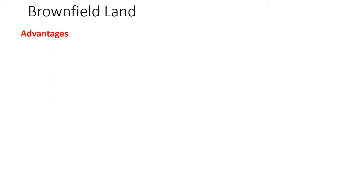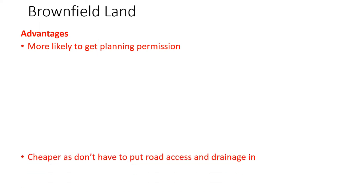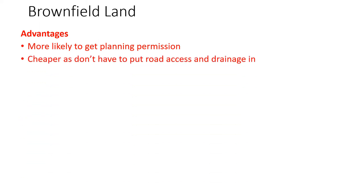These are some of the things you may have written down. Advantages: you're more likely to get planning permission, because local authorities want that land brought back into use — therefore if you apply for planning permission, they're most likely to say yes. In the countryside, there'd be all sorts of reasons not to build. A lot of people complain about losing countryside areas, whereas people like to see brownfield sites turned into something better.